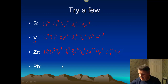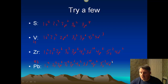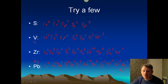Lead is element eighty-two — this one takes a while. It's: 1S2, 2S2, 2P6, 3S2, 3P6, 4S2, 3D10, 4P6, 5S2, 4D10, 5P6 — filling the fifth energy level. Then for the sixth level: 6S2, and now we throw in the F block: 4F14. Then fill 5D10, and finally two more electrons go into 6P2. If you have questions, please come find me in class.